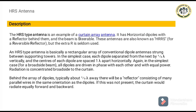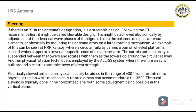The curtain would radiate similarly forward and backward if the reflector was not present. If the antenna name starts with S, it's a steerable model, referred to as a slew-able style according to the ITU recommendation. This can be accomplished either electronically by changing the electrical phase of the signal fed to the columns of dipole antenna components, or physically by mounting the antenna array on a large rotating mechanism. For example, NRK Kvitsøy uses a circular railway that transports a pair of wheeled platforms, each supporting a tower, and as the towers travel around the circular railway, the curtain array is suspended between them and rotates with them. Electrically slewed antenna arrays can typically be aimed at a 30-degree angle from the antenna's physical orientation, while mechanically rotated arrays can be rotated 360 degrees.